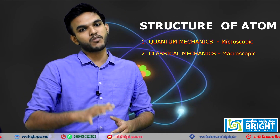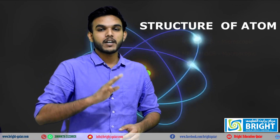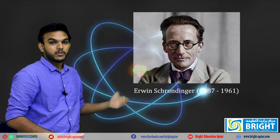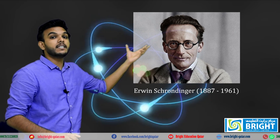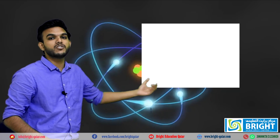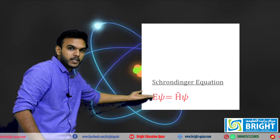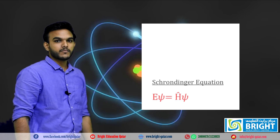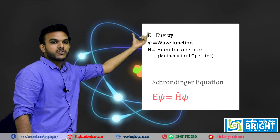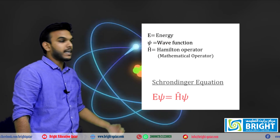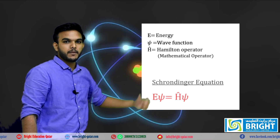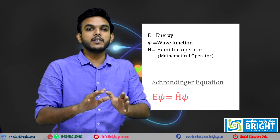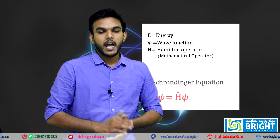Quantum mechanics was developed by Schrödinger, who put forward his equation known as the Schrödinger equation. The Schrödinger equation is: H-cap psi equals E psi, where E is energy, psi is the wave function, and H-cap is the Hamiltonian operator. From this equation we get the energy value.